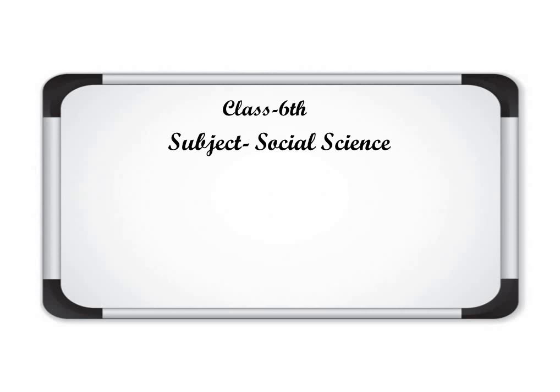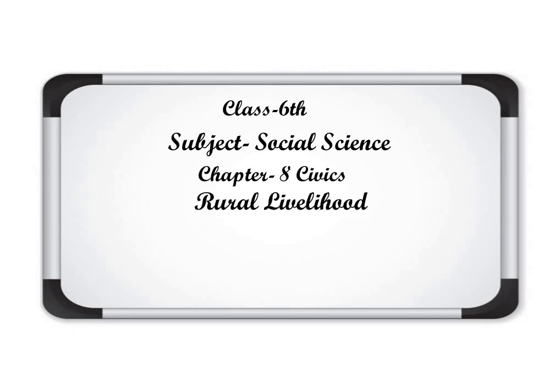Good morning everyone and welcome back. This is class 6th subject Social Science, Chapter number 8 of Civics. The new chapter we are going to start today is Chapter 8 of Civics, and the name of the chapter is Rural Livelihood. Rural relates to villages, and livelihood means the living or income that people in villages earn. We will learn about the ways rural area people get their livelihood and what types of work they are involved in.